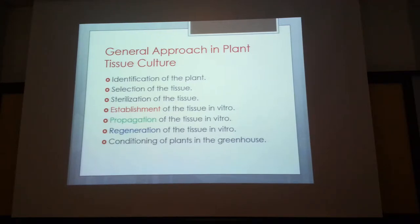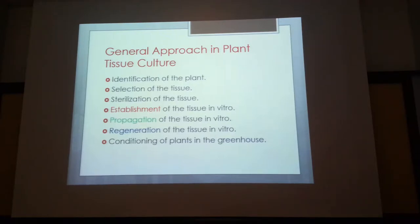We can't transfer the plant directly from tissue culture into the field because the plant is growing in a sugar-rich medium and needs to be weaned off. If the medium has five or ten percent sucrose, we gradually reduce it: five percent, two percent, one percent, then zero percent, before establishing it in the field. This is the process of hardening.